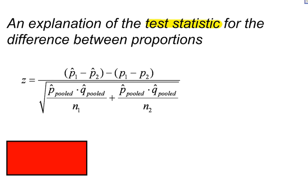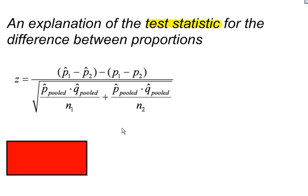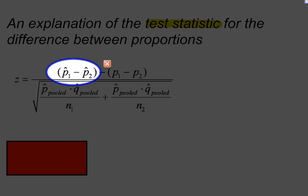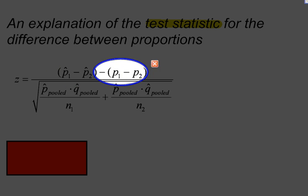This is what it looks like. Yikes, that's big and ugly. Well, let me explain just everything that we've got here. This part is pretty easy. That's the difference between your two sample proportions, whatever those two may be. So you should be able to pick those out from your problem.